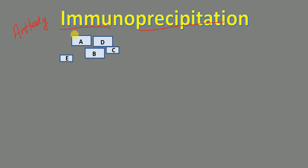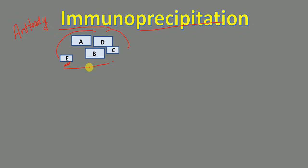This technique is used when you have a mixture of proteins and you want to specifically detect one protein from that mixture. Let's say that protein is protein E — in that case, you would use immunoprecipitation.